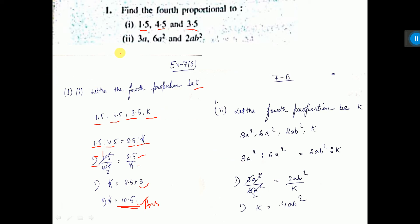Here also, 3A, 6A squared, 2AB squared. So you consider fourth proportional K. Then first, second, third, fourth. So, first proportional is to second proportional equals third proportional is to fourth proportional. This is the formula.